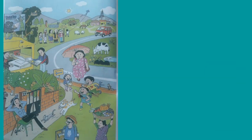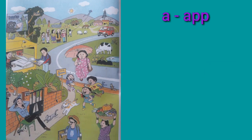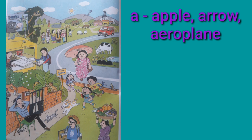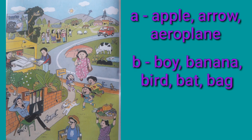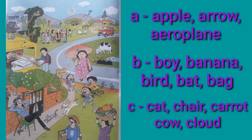Look at the chart. From A: Apple, Arrow, Aeroplane. From B: Boy, Banana, Bird, Bat.